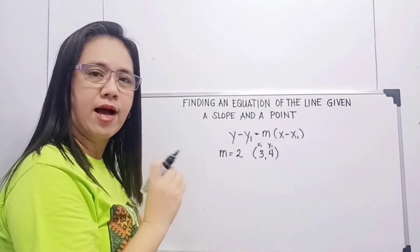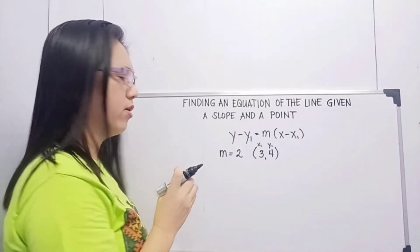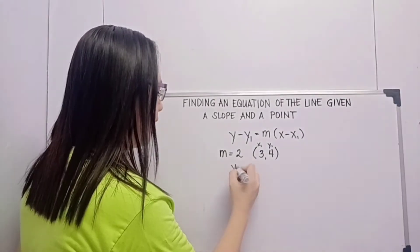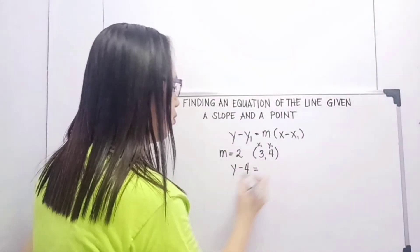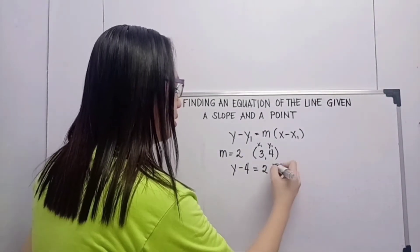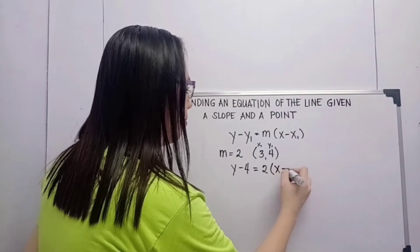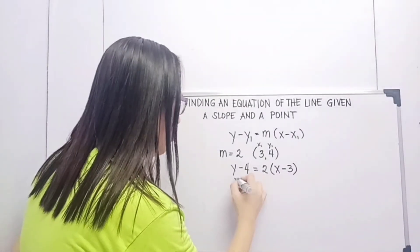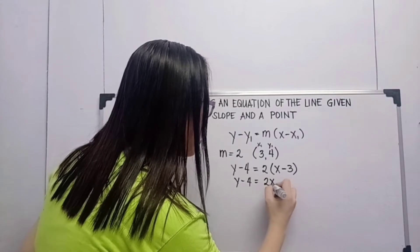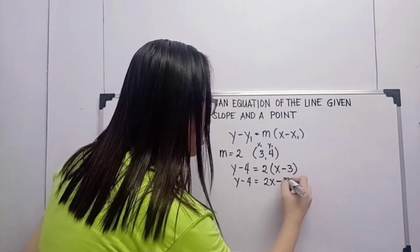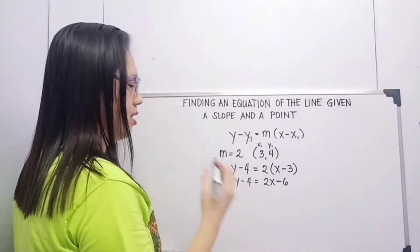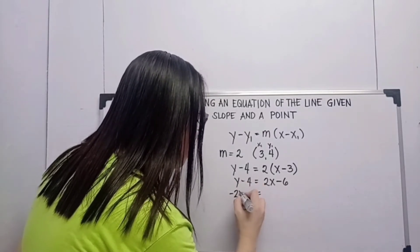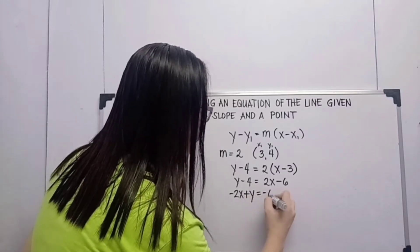So therefore, the variables that will remain are x and y, because those are what we need in the equation of the line. So, y minus 4 is equal to 2 times the quantity x minus 3. Then we multiply: y minus 4 is equal to 2x minus 6. Then we transpose: 2x will become negative 2x, then plus y is equal to negative 6.